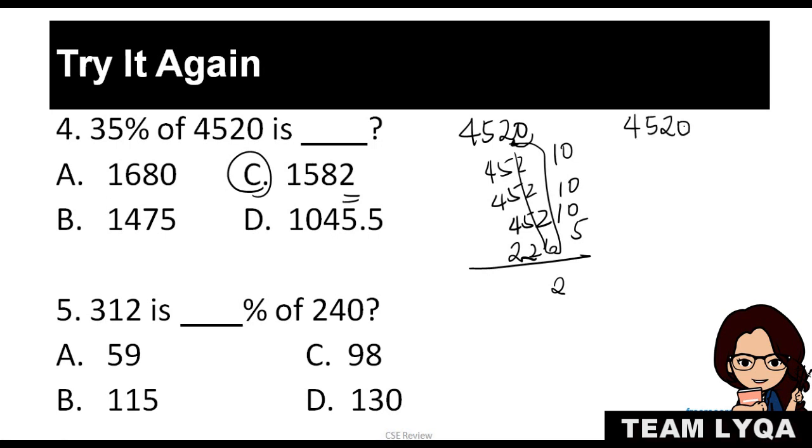Another option would be this, by estimation. So, 4520, ang hinahanap daw is 35 percent. Ngayon, ang 35 percent, di ba malapit na siya sa 33.33 percent? Or one-third? So, what I could do would be, i-divide ko siya in my mind, estimation lang, divide mo siya by 3. So, 45 divided by 3 is 1500 plus. And ang pinakamalapit lang sa sagot na sagot is still letter C. So, again, you can do that. Pwede niyo din siya a traditional method. So, 0.35 times 4520 equals. Whatever works for you. But again, I think my method is actually faster.